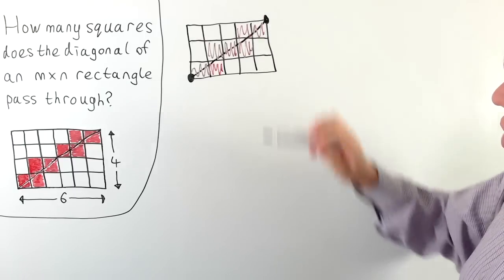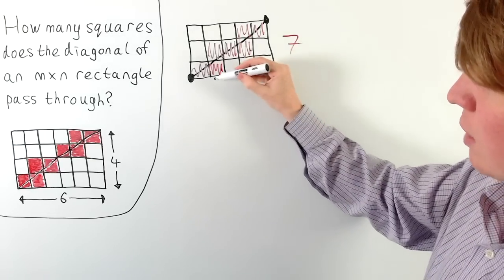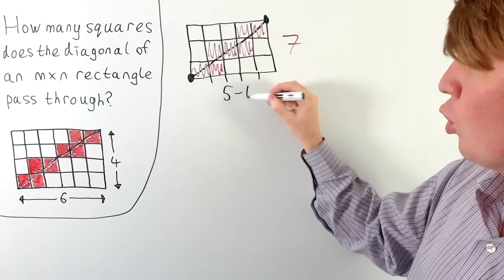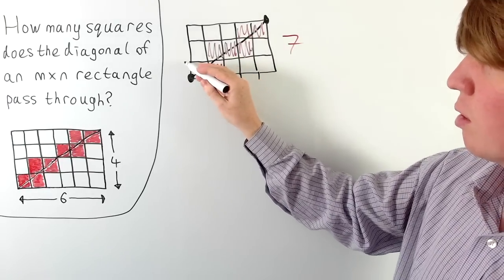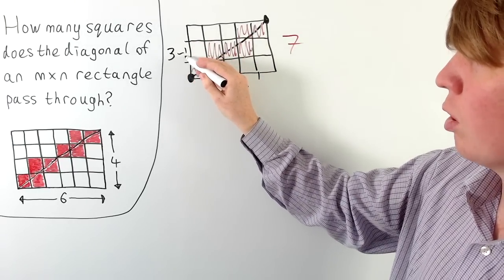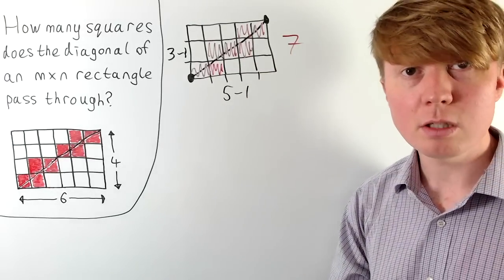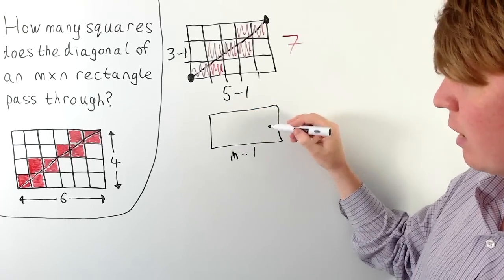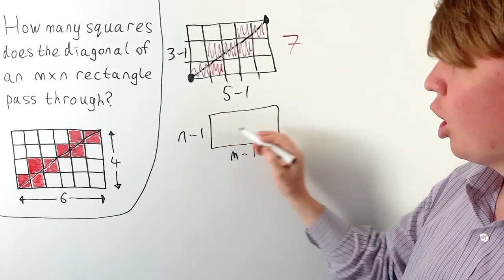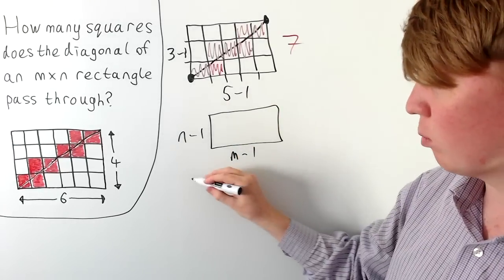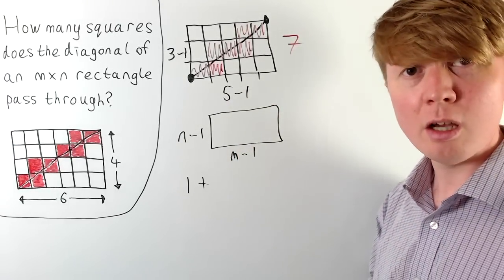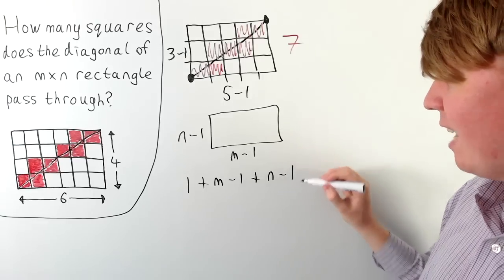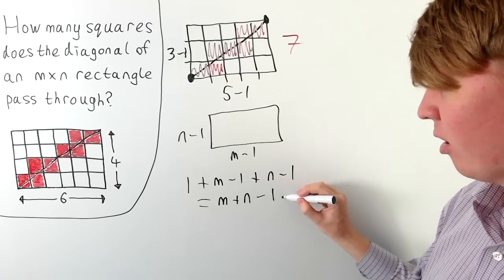We can generalize this approach. We get 7 for a 5 by 3 rectangle because we start in the bottom left corner, then cross 4 (that is, 5 minus 1) vertical grid lines, and 2 (that is, 3 minus 1) horizontal grid lines. For a general m by n rectangle we cross m minus 1 vertical lines and n minus 1 horizontal lines. Including the first square, a sensible formula is 1 + (m − 1) + (n − 1), which simplifies to m + n − 1.